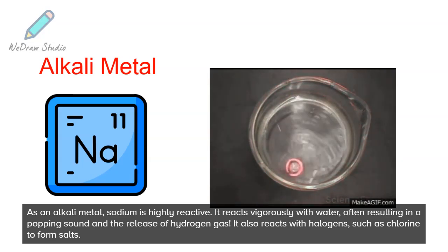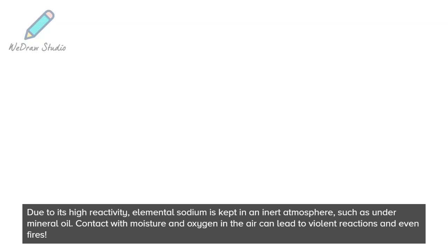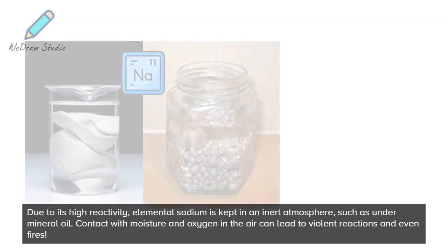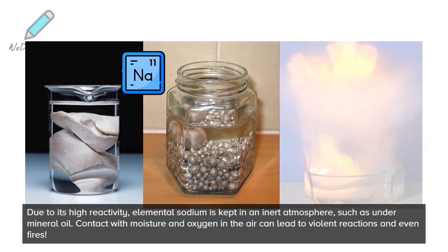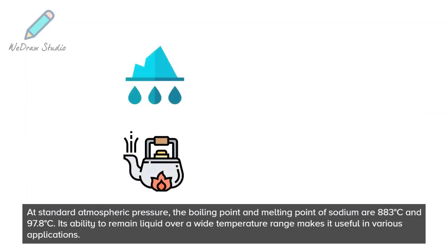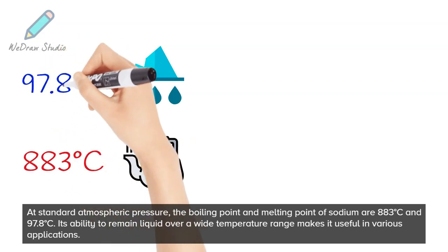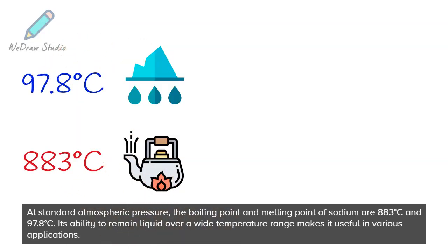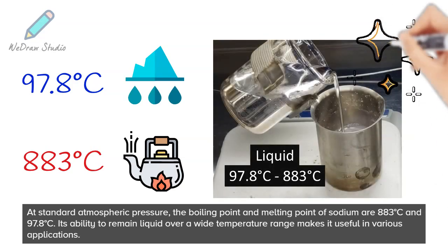It also reacts with halogens, such as chlorine, to form salts. Due to its high reactivity, elemental sodium is kept in an inert atmosphere, such as under mineral oil. Contact with moisture and oxygen in the air can lead to violent reactions and even fires. At standard atmospheric pressure, the boiling point and melting point of sodium are 883 degrees Celsius and 97.8 degrees Celsius. Its ability to remain liquid over a wide temperature range makes it useful in various applications.